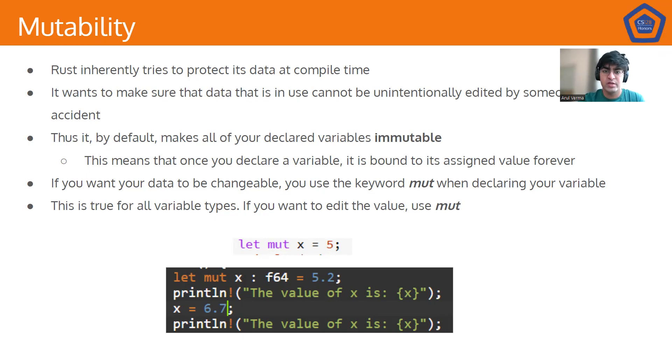And if you want to change your data at any point, you cannot use an immutable data type. You have to use a mutable data type. And to make a mutable data type, you have to use the keyword mut when declaring your variable. And this is true for all variable types, whether it's a float, a boolean, an integer, whatever. An example of this is let mut x equals 5. Now, we can change the value of x at any point in the future. Let mut x equals f64 5.2. Then we say x equals 6.7. When we print it, we'll get 6.7.